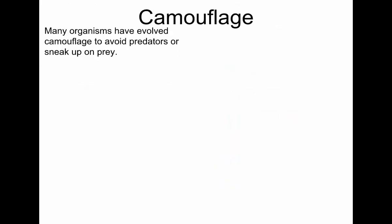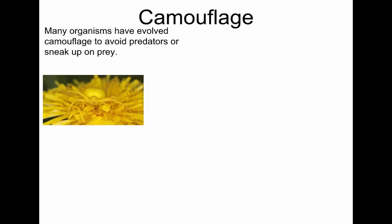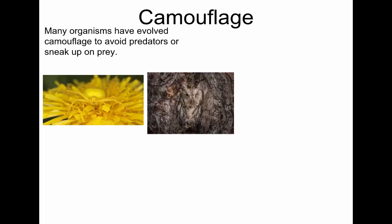Camouflage is a great example of adaptation. Many species have evolved to be camouflaged to avoid predators, or sometimes to sneak up on their prey. Here are some examples — look at this insect, exactly the color of the petals of the flower it lives in. Or this owl.